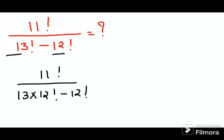So now if you see I am getting certain things which are common. So I can write this as nothing but 11 factorial upon 12 factorial and in bracket I will get 13 minus 1.